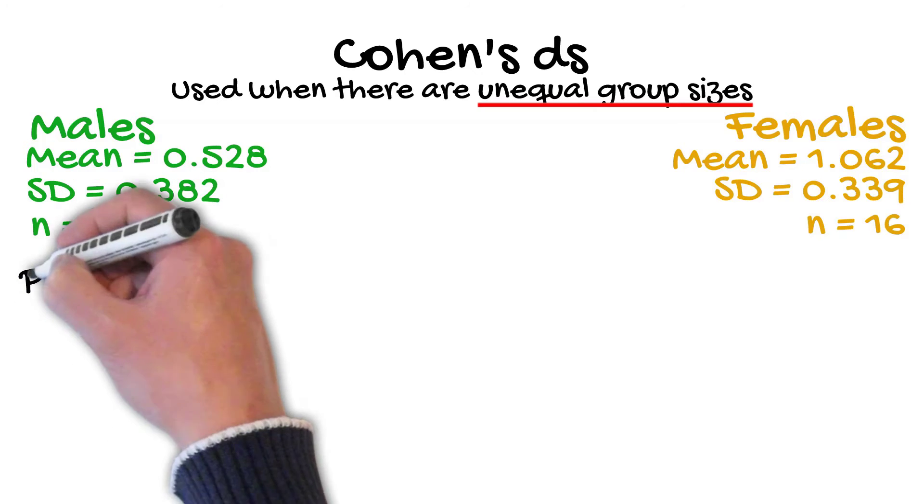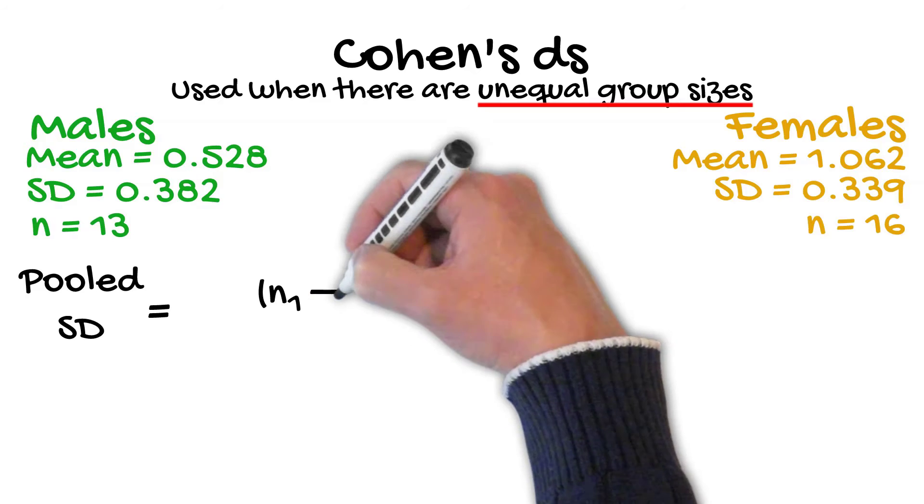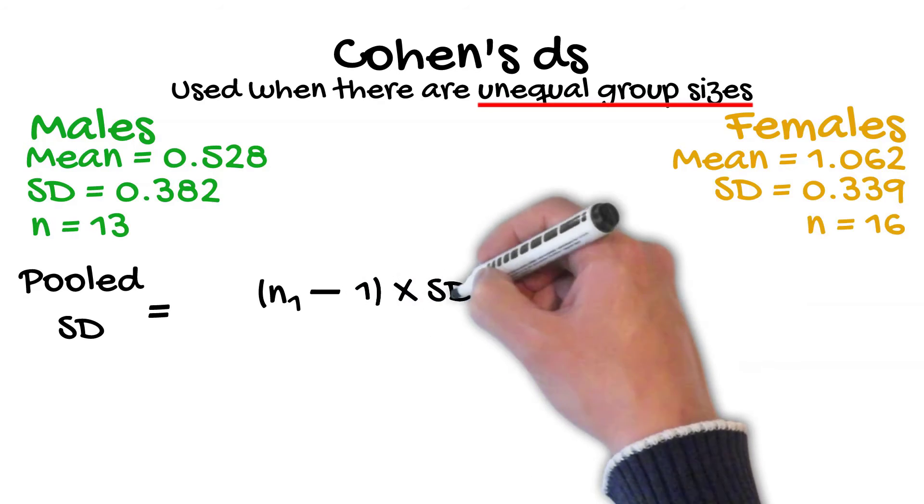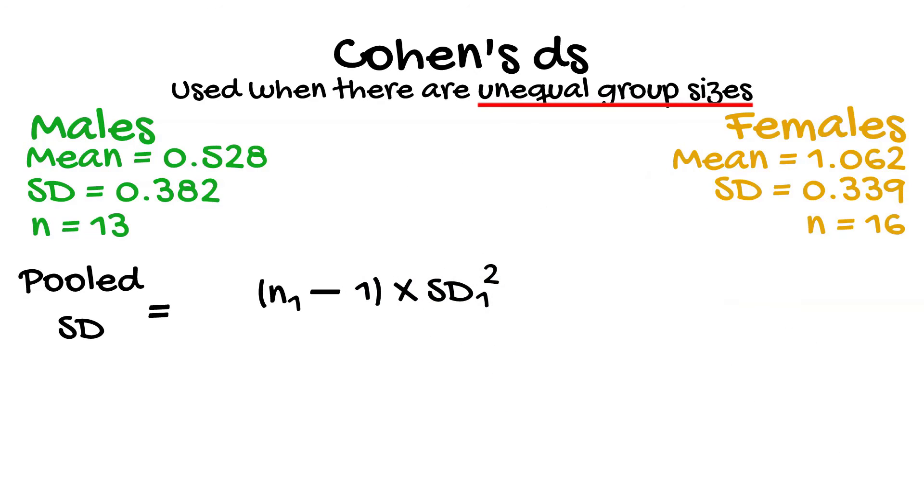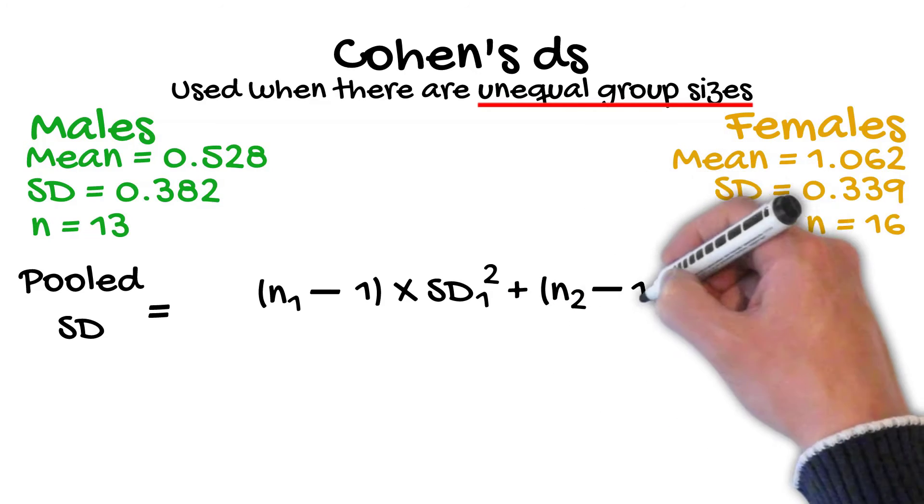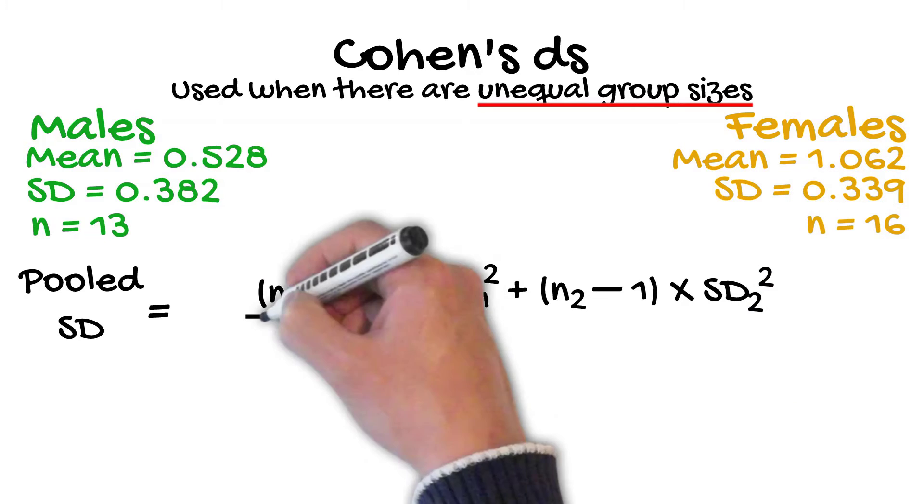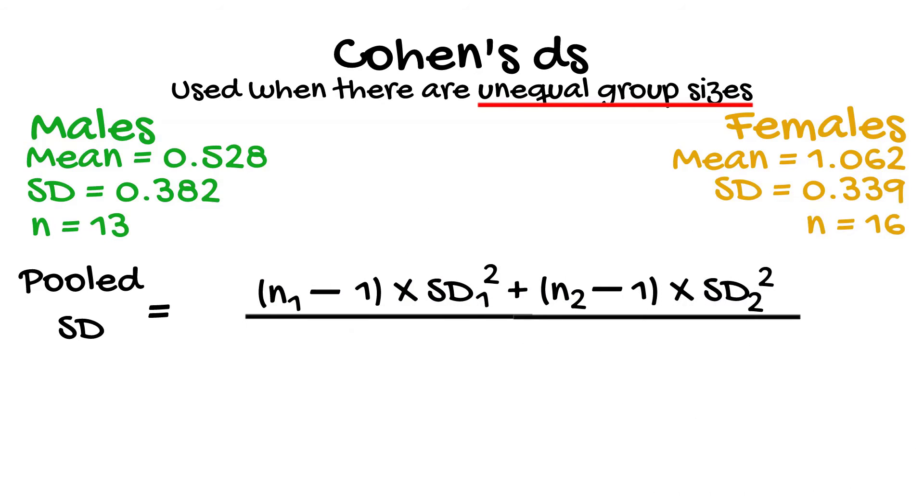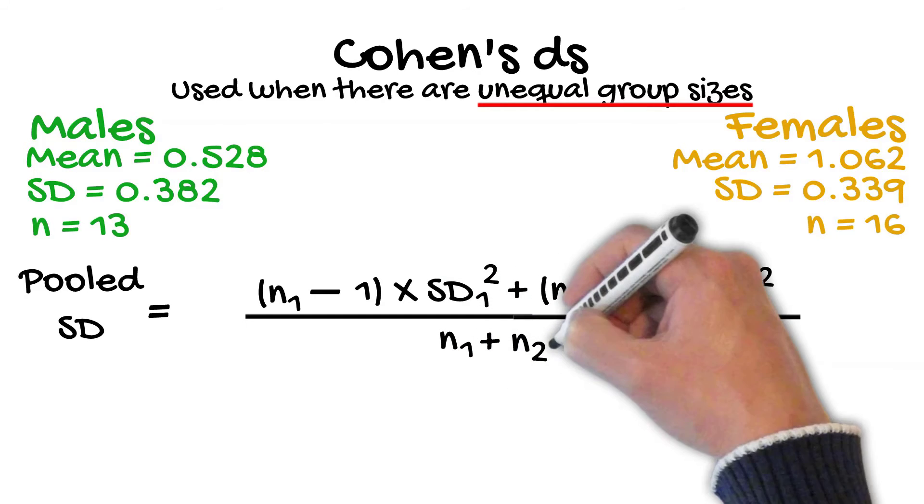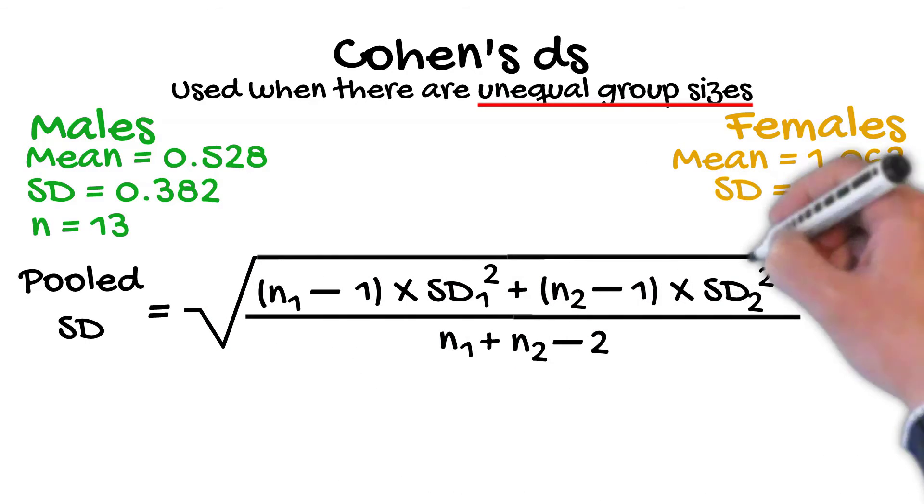So, the pooled standard deviation equals the group size of the first group minus 1 multiplied by the standard deviation of that group squared, plus the group size of the second group minus 1 multiplied by the standard deviation of that second group squared. Divide all of that by the group size of the first group plus that of the second group minus 2. And finally, you take the square root of everything.